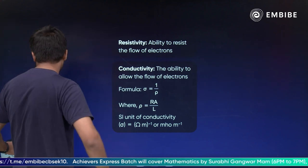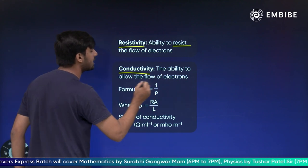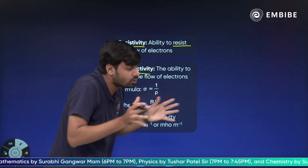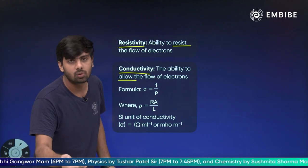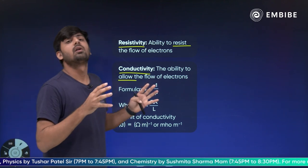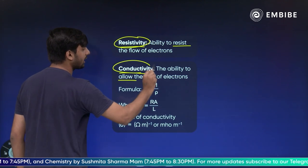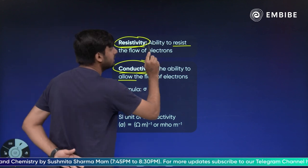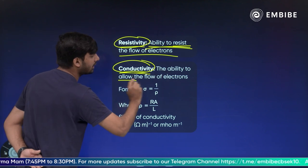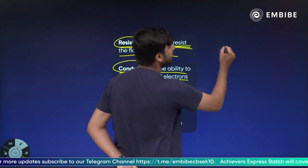You are talking about resistivity, which is how you resist. We have to tell that conductivity is how we allow. Conductivity is the ability to allow the flow of electrons.